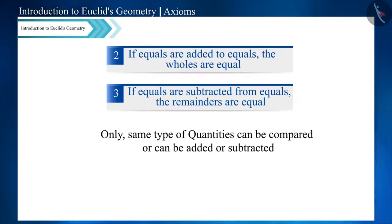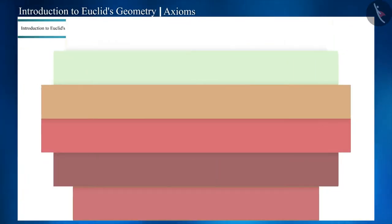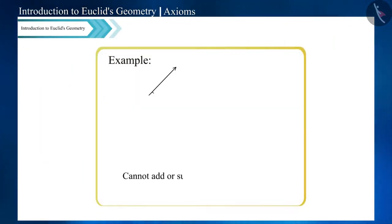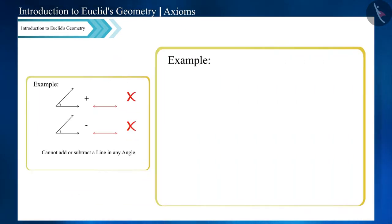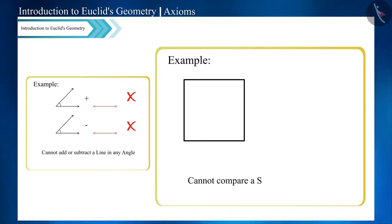To understand this statement clearly, we will see some more examples. For instance, we cannot add or subtract a line and an angle, nor can we compare a square with any angle.